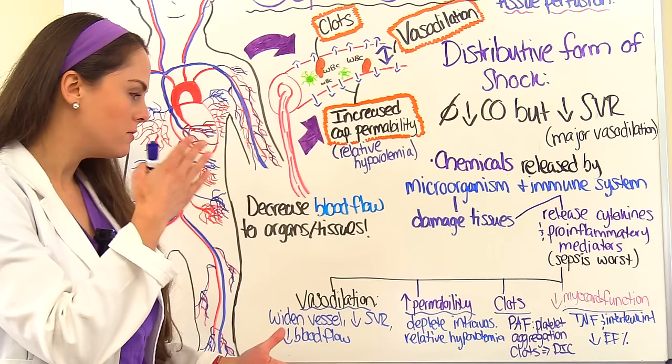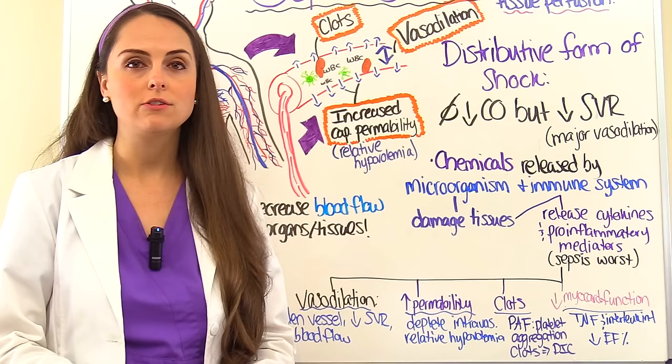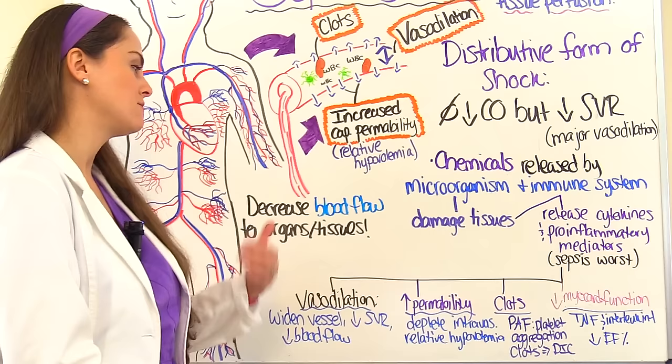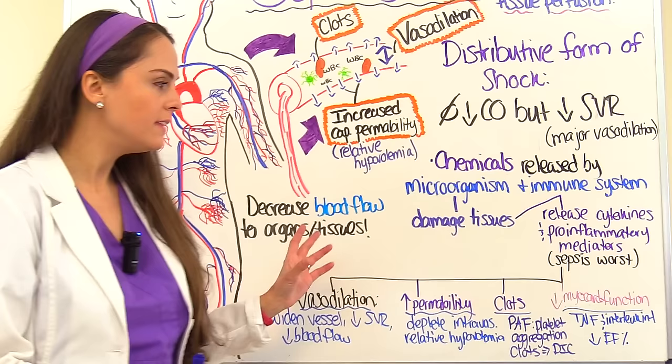If blood cannot flow to those cells due to all these clots, tissue perfusion is severely decreased. So with vasodilation, increased vessel permeability, and system-wide clot formation, you can see how cells are being deprived of oxygen. This is why treatment will try to reverse the vasodilation, address the clots, and reduce the system-wide inflammation occurring in the body.